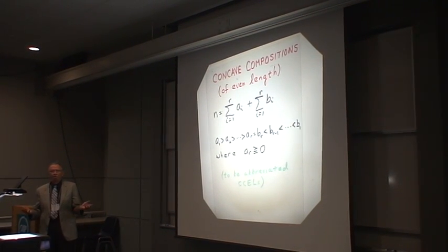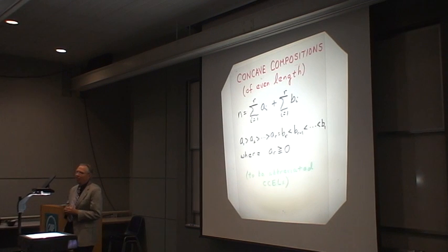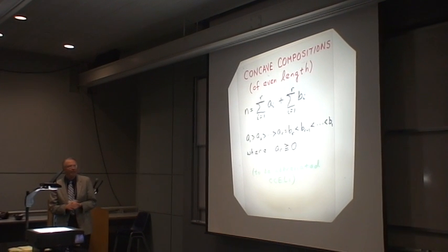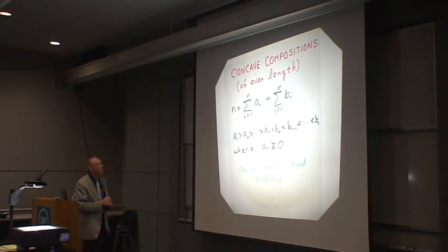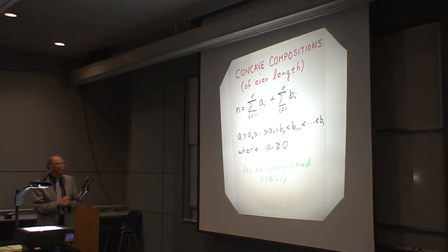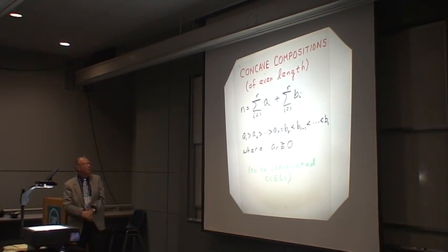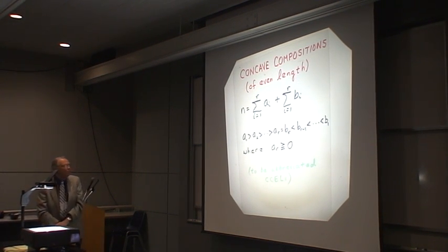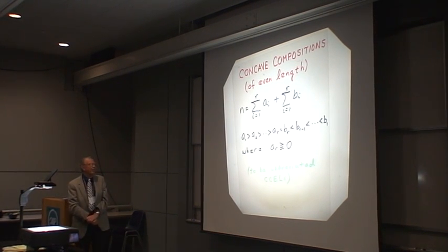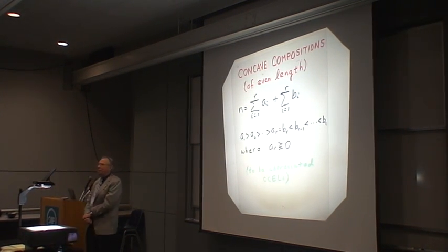So once you get into the world of ordering the summands of a partition in the world of compositions, you can obviously throw some restrictions in and throw out others. What I would call concave compositions are fundamentally partitions sort of glued together right in the middle where you have strict decrease into the middle, then you have two summands that are identical, and then you have strict increase out to the end. And these I will call concave compositions of even length for obvious reasons.